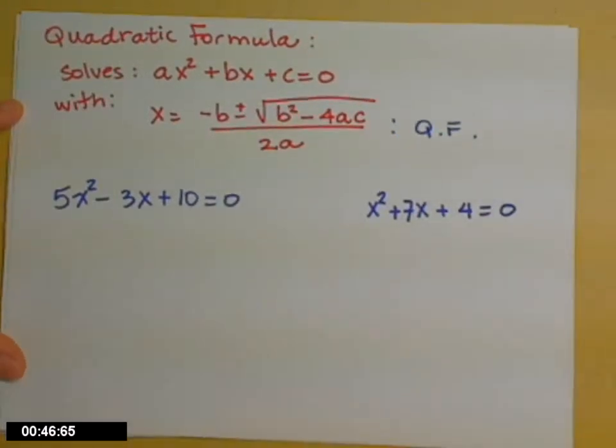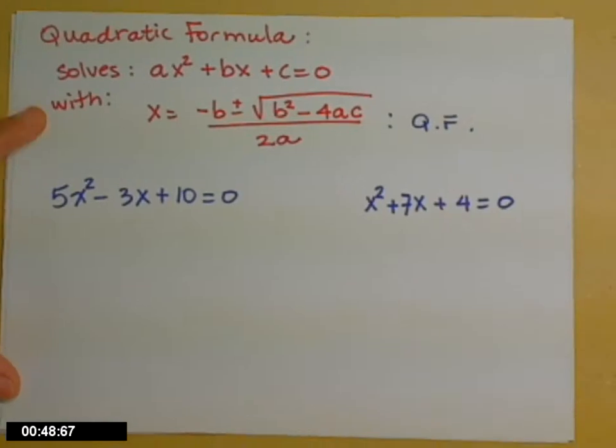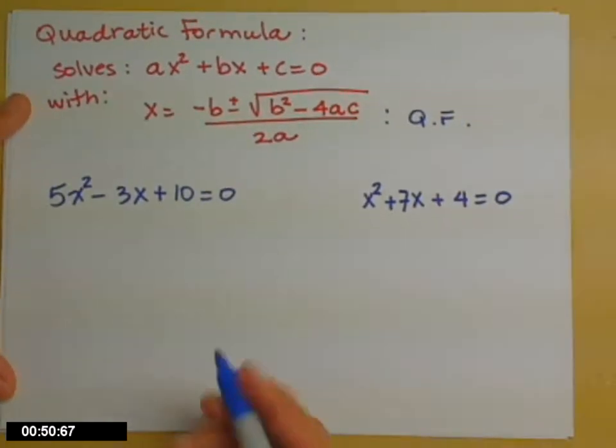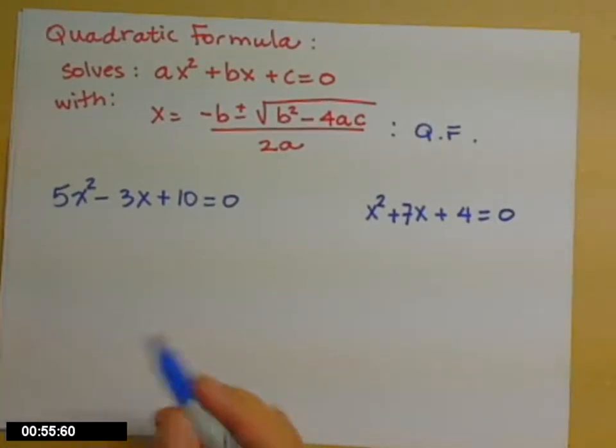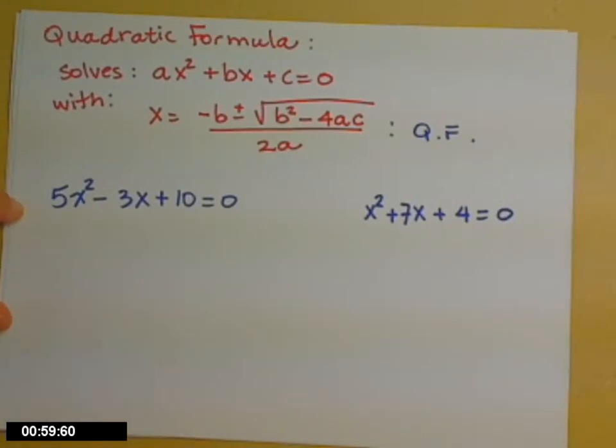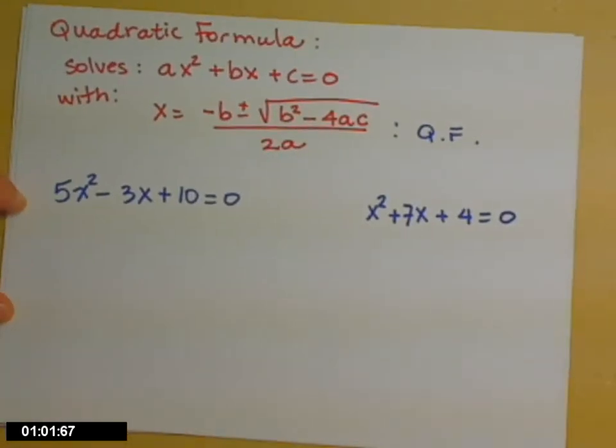So when you have a quadratic equation, we have a couple of solution methods now. You might try factoring because factoring is the fastest. If it factors—not all quadratic equations factor, which is why we have these other tools. This one, I think I'd spend more time trying to factor it than it would take me to use the quadratic formula. So I'm going to go ahead and go there.